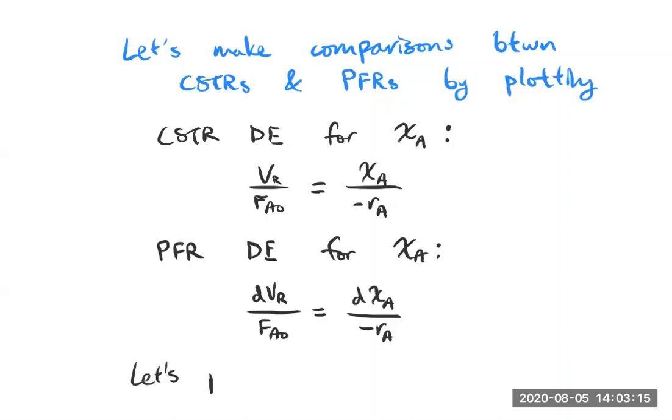So because of this, let's try doing the following. Let's plot 1 over minus r_A versus conversion of A. So what are we doing here? Well, what is this term? I guess we can see where this comes from. But let's talk about, conceptually, what is this? This is the inverse of the rate of disappearance of A.